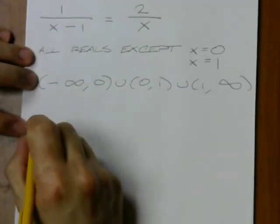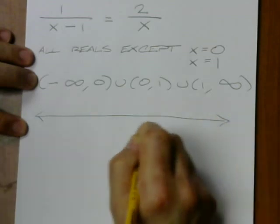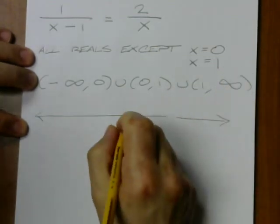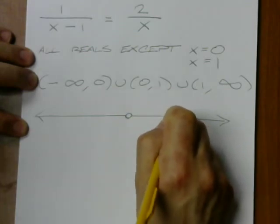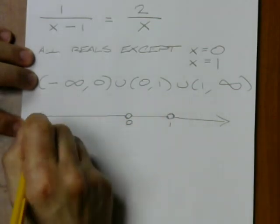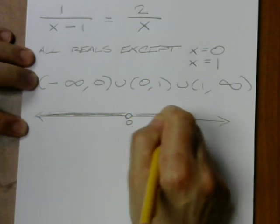If I were to draw this on a number line, what I would do is I'd say, okay, we're going to have a big hole and a big hole. Well, not really a big hole because numbers are small. They don't really take up any width, but whatever. At 0, at 1, everything else is good except for 0 and 1.